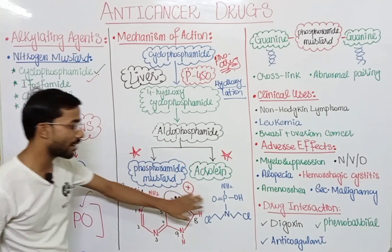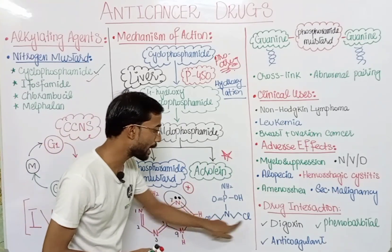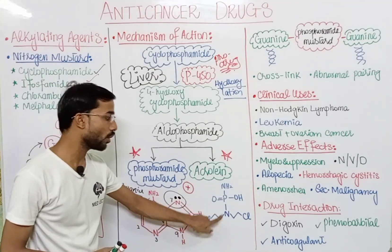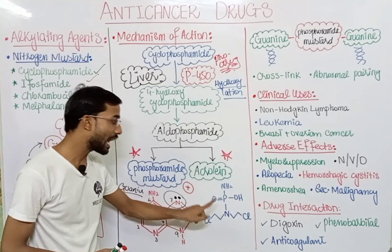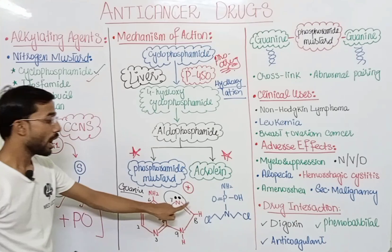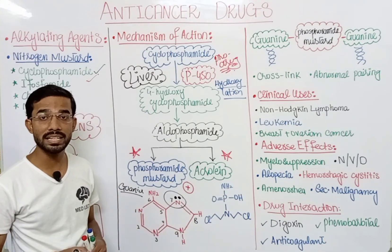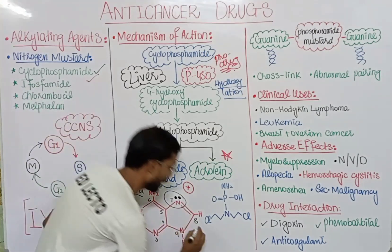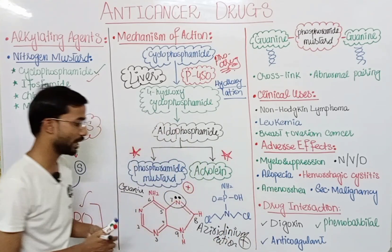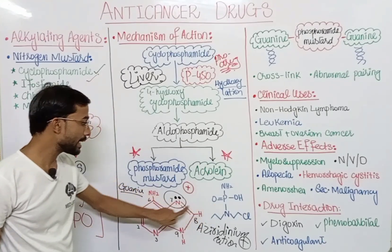Phosphoramide mustard has a structure with chlorine atoms at both corners. Initially there is no charge on phosphoramide mustard, but a positive charge is created on it. First, one chlorine is removed from phosphoramide mustard, forming a cation called the aziridinium cation, which carries a positive charge. After that it forms a ring, and phosphoramide mustard can then attach to guanine.